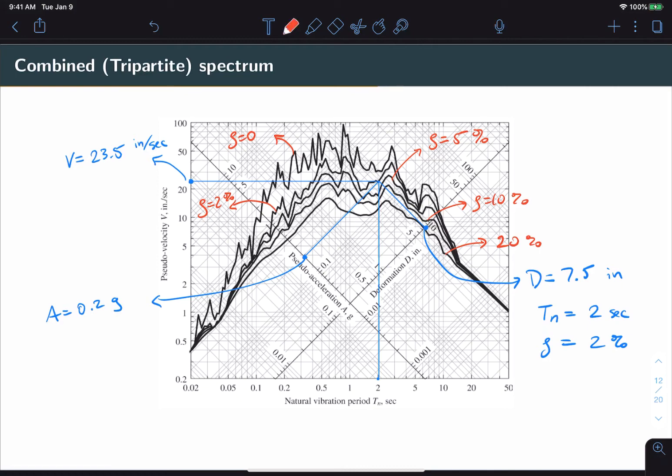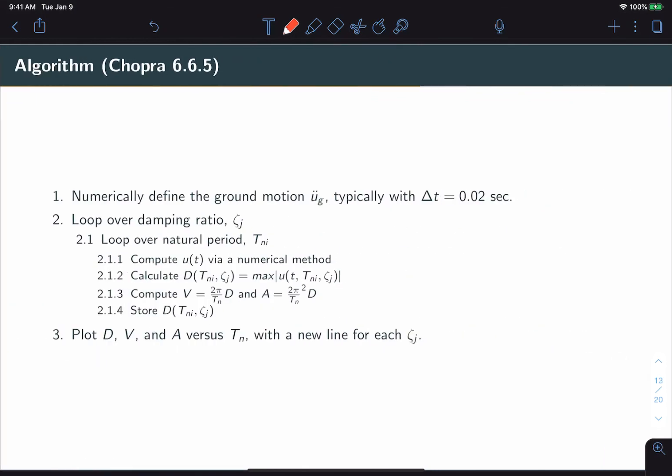One thing to notice is that the curves will get shorter and flatter as damping increases. For your reference, here is the complete algorithm for generating the response spectrum, adapted from Chopra 6.6.5. First, you'll numerically define or obtain a ground acceleration record. And it's most common to see these with a sampling time of 0.02 seconds.